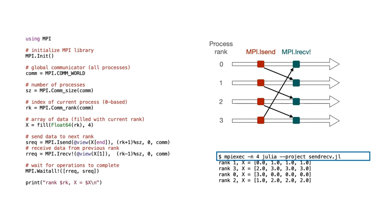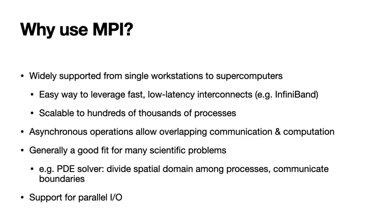So what are the advantages of using MPI? First, it's extremely widely supported — every supercomputer in the world will have an MPI implementation, right down to single workstations. It's a very easy way to leverage fast, low-latency network hardware such as InfiniBand, and it's a proven model that's scalable to hundreds of thousands of processes. The asynchronous operations are a very convenient mechanism for overlapping communication and computation, and it's generally a pretty good fit for a lot of scientific problems. The classic example is a PDE solver where you define your spatial domain across your processes and use MPI to communicate the boundary information. It also provides a fairly good mechanism for doing parallel read/write operations.